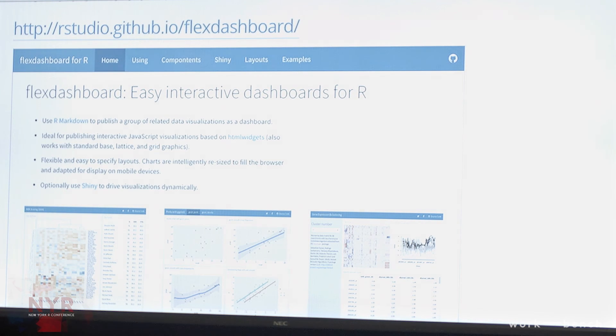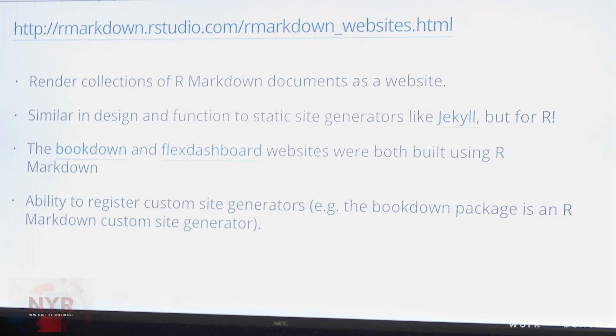Another thing to announce that you can check out is R Markdown websites, which is similar to Bookdown but just says I want to make a website with R Markdown — a collection of pages, maybe five pages or 20 pages. If you're familiar with products like Jekyll, which is a static site generator for Ruby, there are actually hundreds of static site generators. This is one for R and it's all based on R Markdown. We've got documentation on the R Markdown website on how to use it, and actually the Bookdown website and the Flex Dashboard website I showed earlier were both built using R Markdown websites.